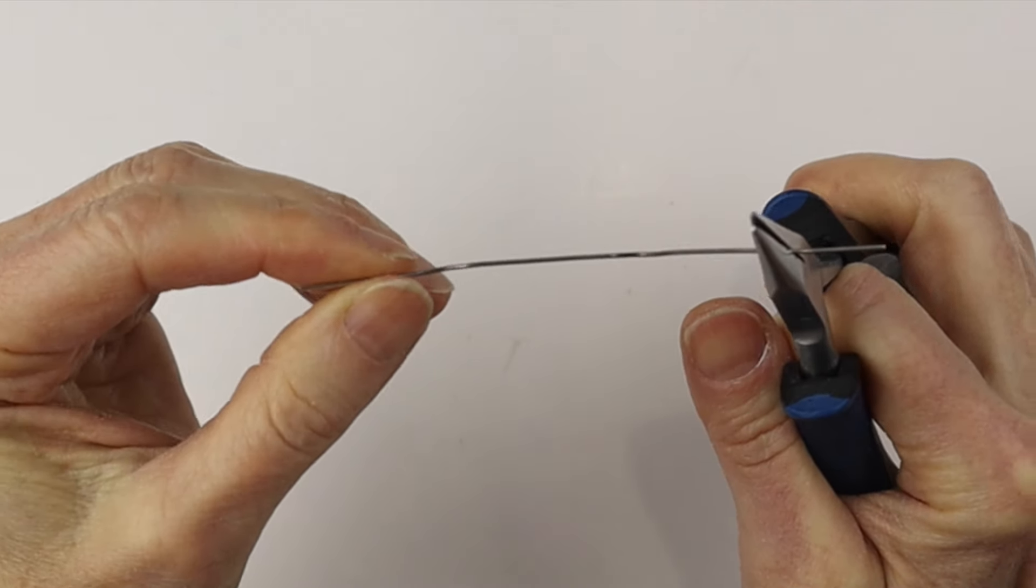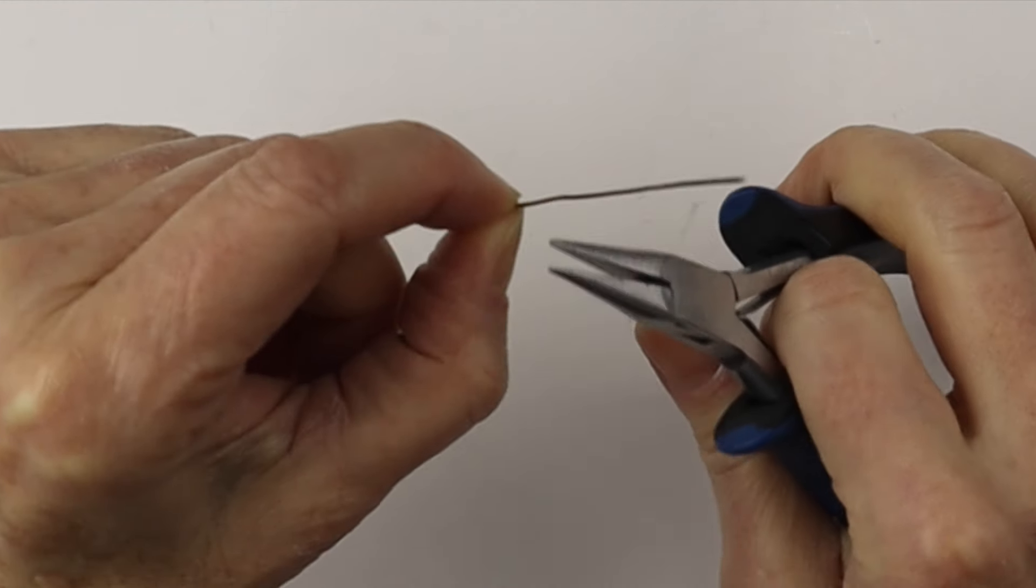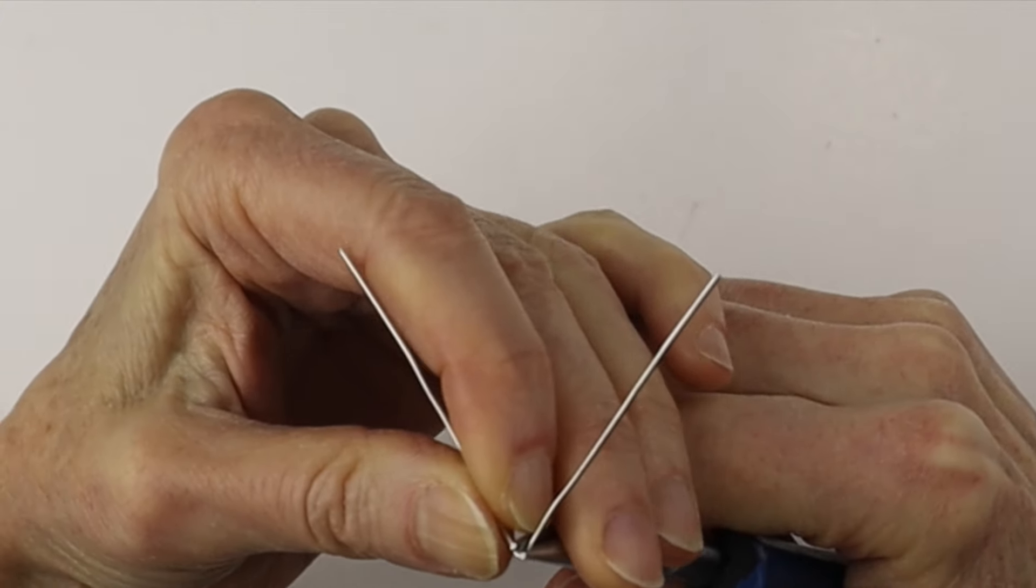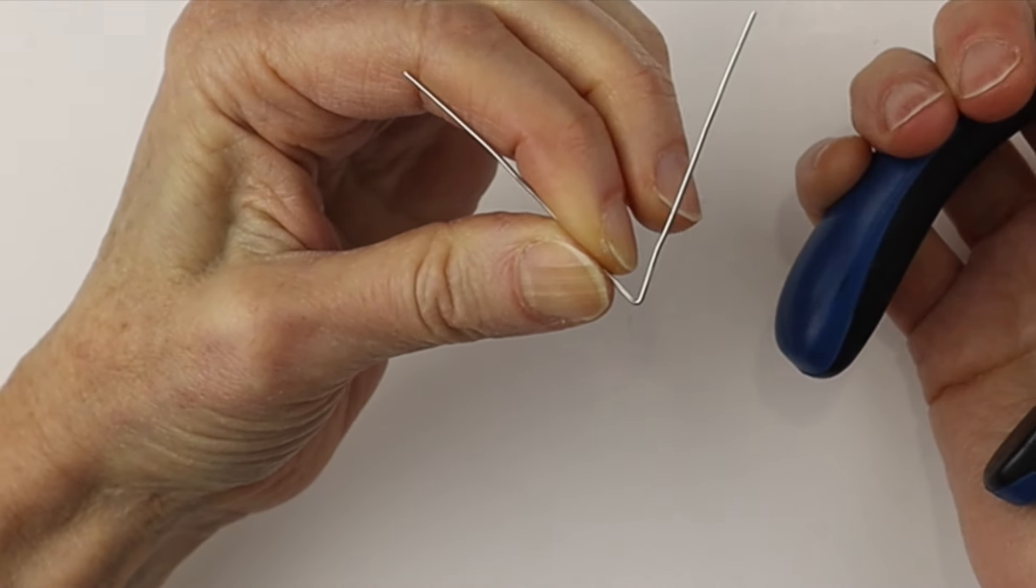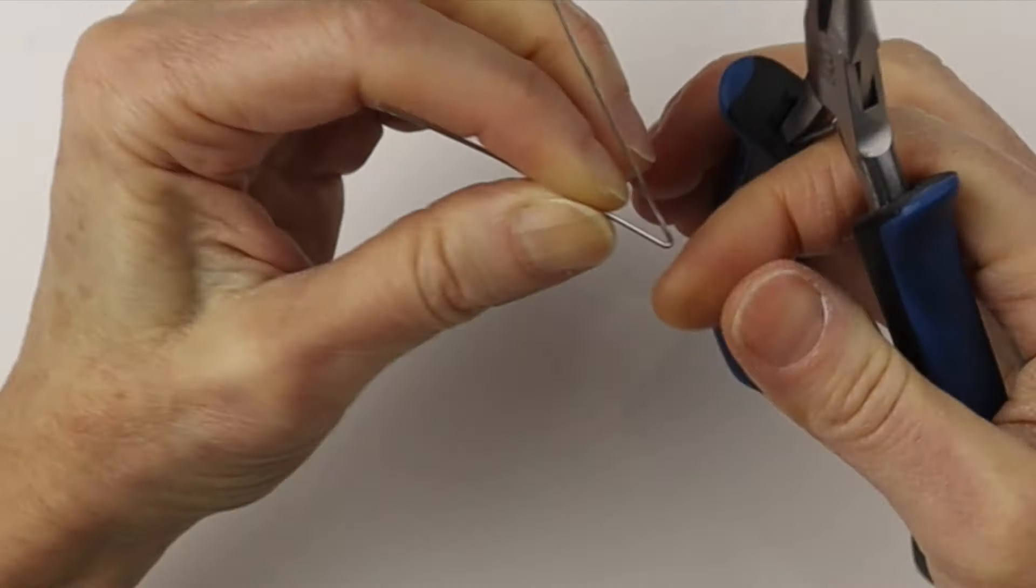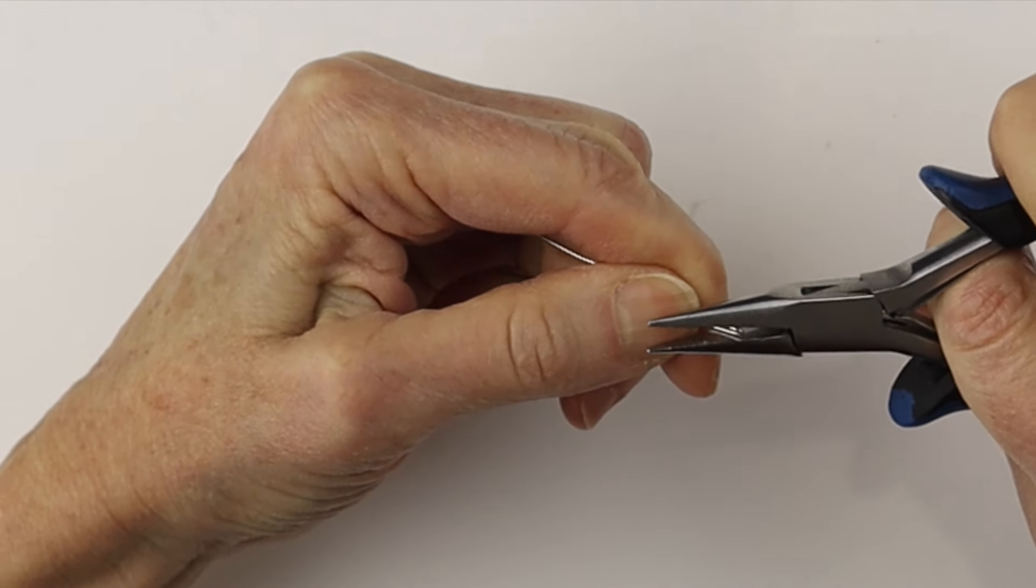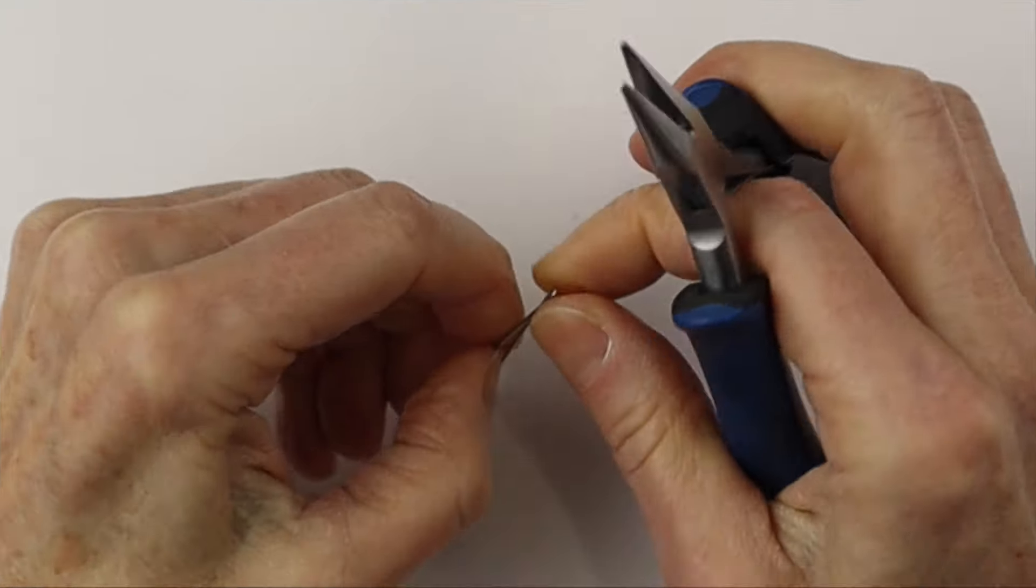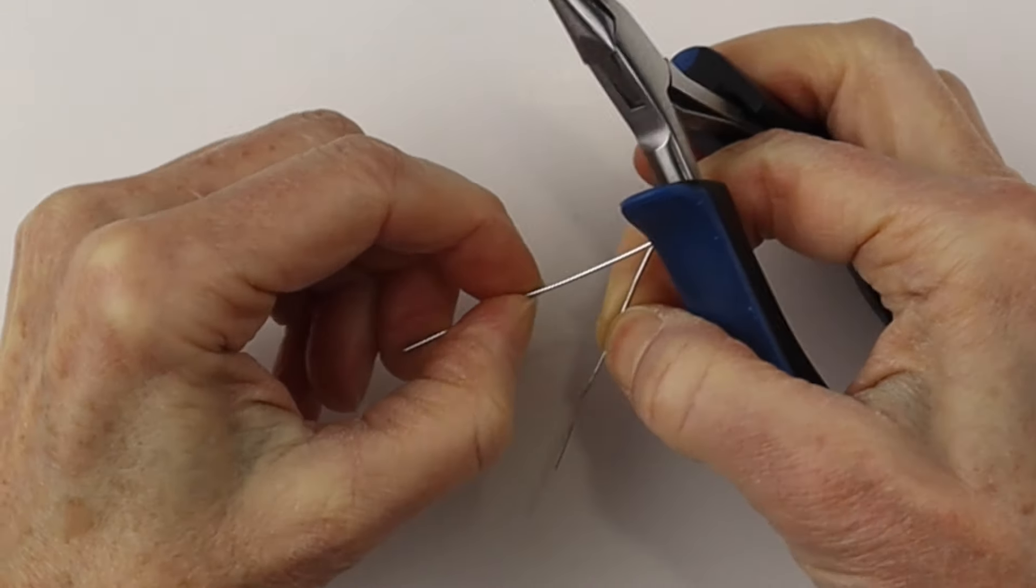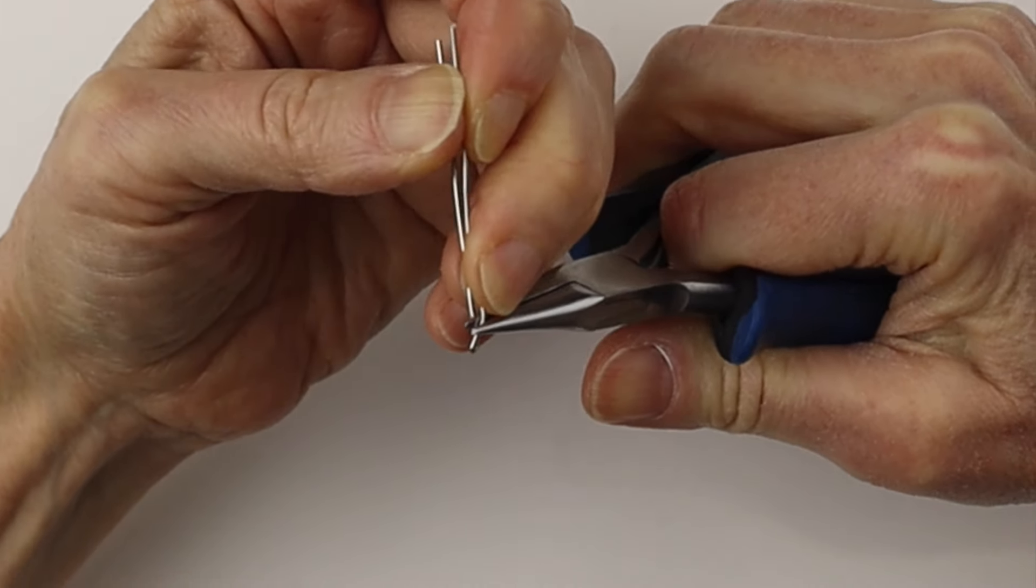Straighten it out and then we are going to measure halfway. We're going to take our flat pliers and give it a sharp bend at the halfway point. So we're just going to press it in a little bit, push the wires together and give it a little squeeze with the flat pliers. Then we're going to gently open it up so we don't snap it, but we want a nice sharp bend at the end.